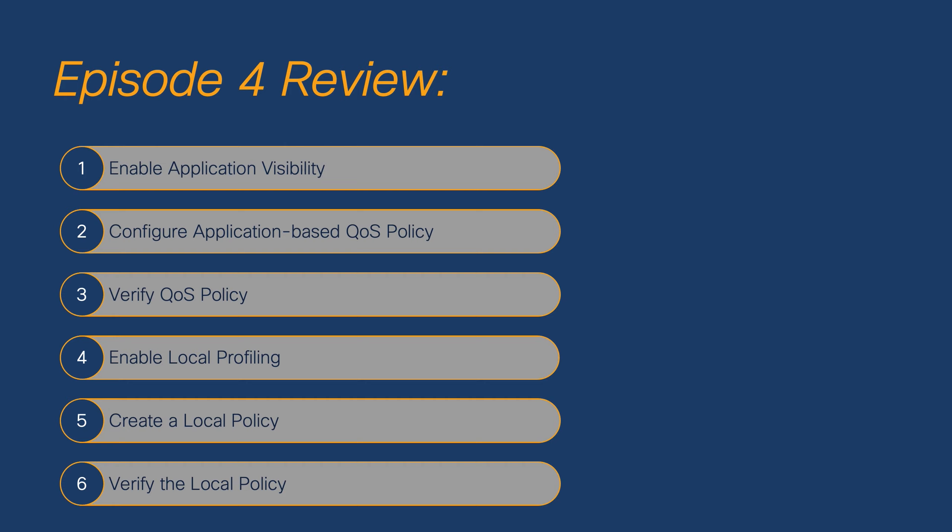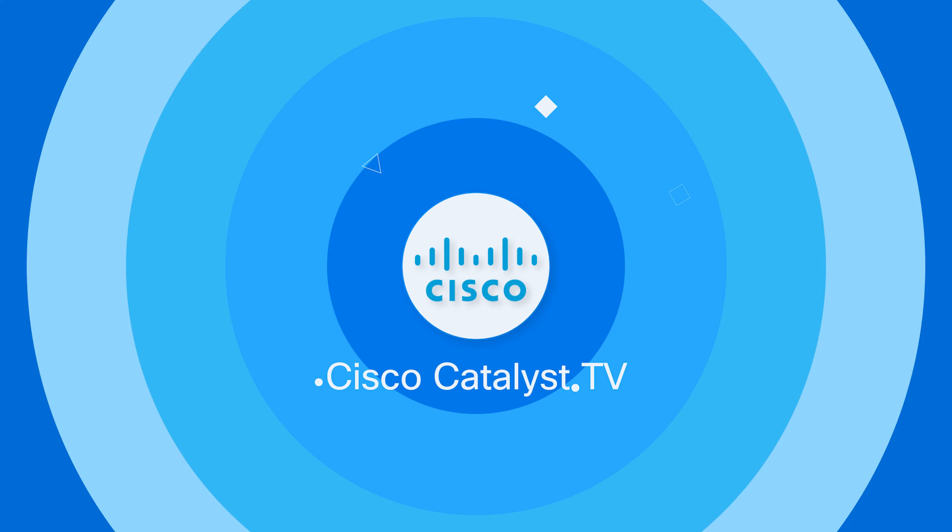And with that, we've come to the end of Episode 4 of the 9800 101 series. In summary, we've enabled Application Visibility, used that to create an app-based QoS policy, verified that QoS policy, enabled local profiling for device classification on our WLC, used that to create a local policy applied to different device types, and then verified that local policy. Please join us next time where we'll go over the detailed steps to define a secure employee WLAN as well as a guest WLAN. If you found this video helpful and informative, please click the like button and subscribe to our YouTube channel. Thank you for watching, and have a nice day.